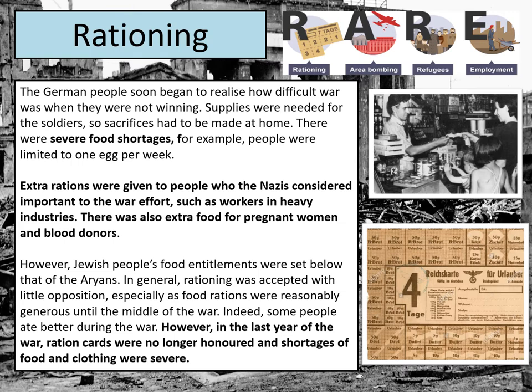The first area is rationing. From 1939, rationing didn't really impact German people when they were winning — defeating six nations in only weeks, they didn't really have to go without, apart from occasional shortages of things like soap. However, from 1941, when they had invaded the Soviet Union and the tide started to turn against the German army, German people soon began to realise how much they would have to do without.